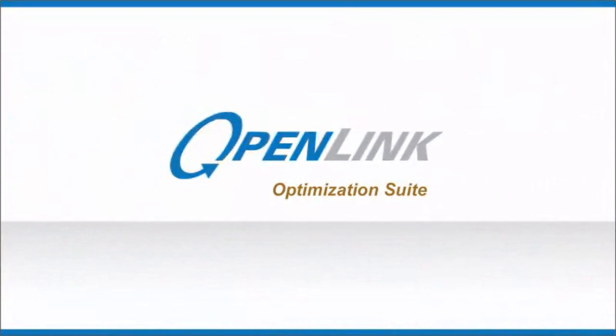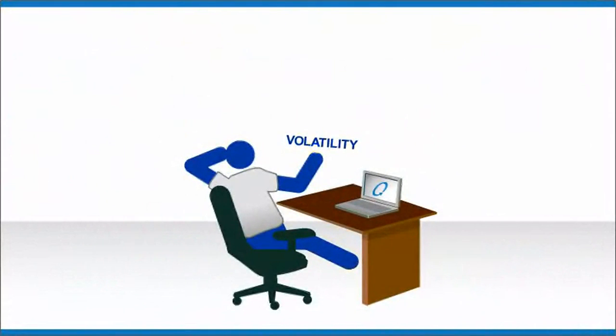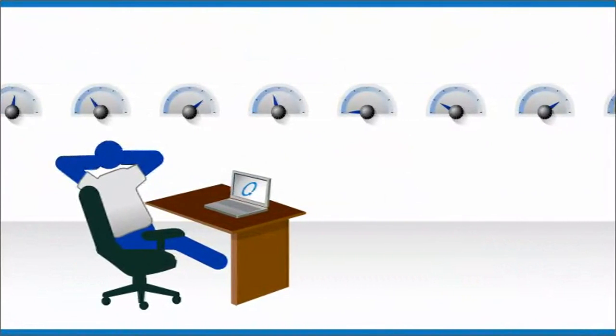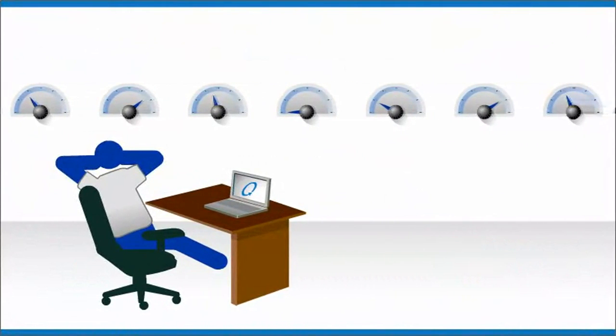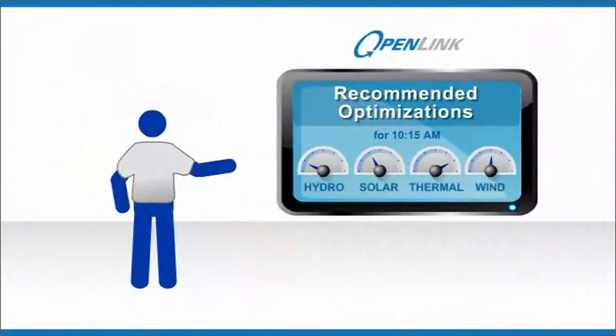The OpenLink Optimization Suite was created to overcome the complexity and make the volatility work to your advantage. You can re-optimize the entire production portfolio every 15 minutes to leverage the variations in the availability of renewables as they occur.